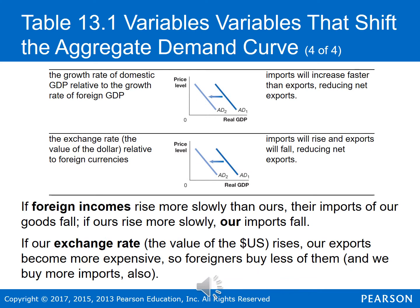The final variable affecting the shift in the aggregate demand curve is changes in foreign variables. If households and firms in other countries buy fewer U.S. goods, or if households and firms in the U.S. buy more foreign goods, net exports will fall and the aggregate demand curve will shift to the left. When real GDP in the U.S. increases faster than real GDP in other countries, U.S. imports will increase faster than U.S. exports and net exports will fall. We also see net exports change when exchange rates change — if the value of the U.S. dollar rises, our exports become more expensive so foreign buyers buy less of them, and we end up buying more imports.